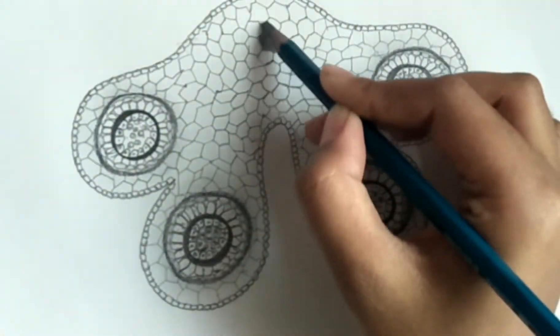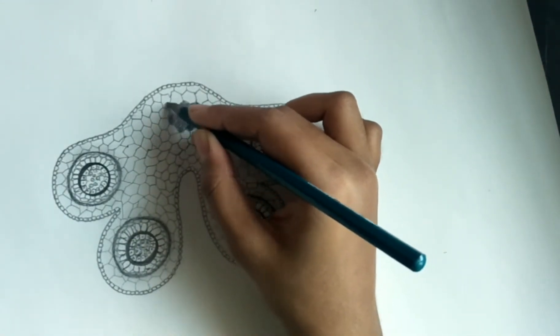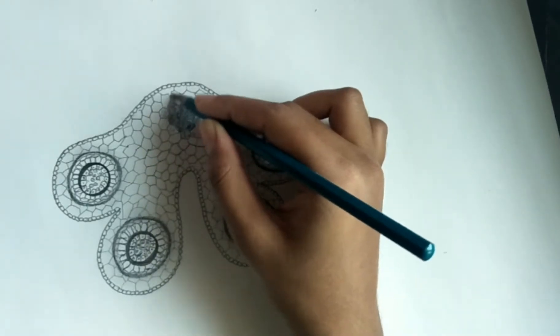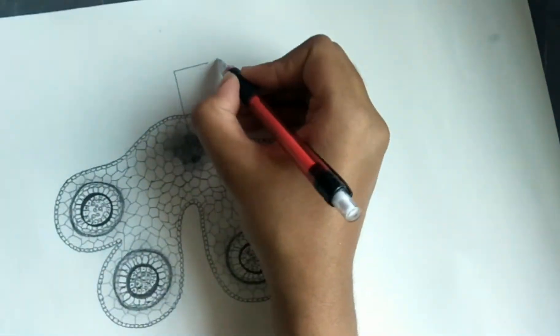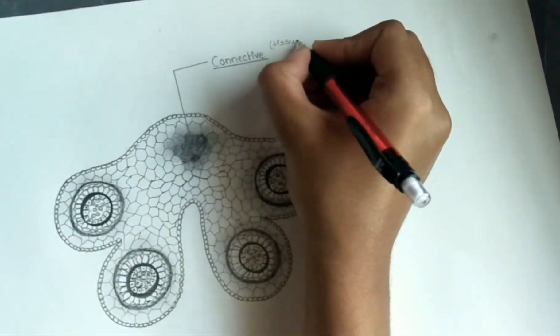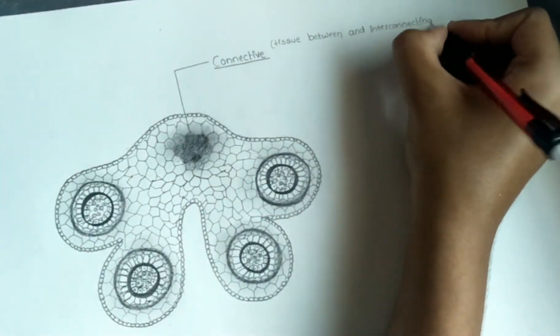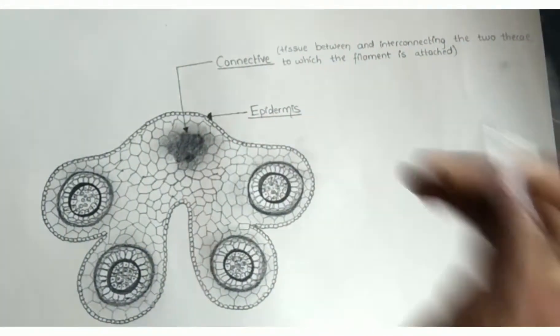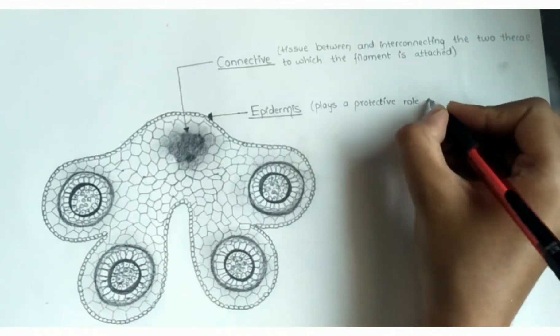Not shading it, but this is the region of the epidermis. It is the outermost wall layer of anther which is protective in function.